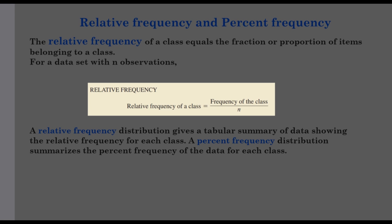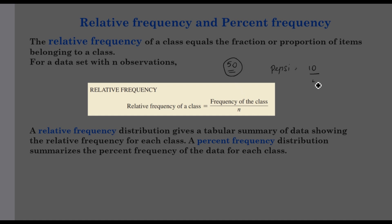What is relative frequency? Relative frequency of a class equals the fraction or proportion of items belonging to a class. So in a particular data set, in this case Pepsi, 10 is the frequency. The total number of items is 50. The relative frequency is the frequency of the class — that is 10 — divided by the total number n, which is 50. That is 1 by 5.